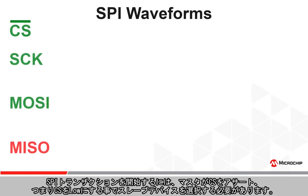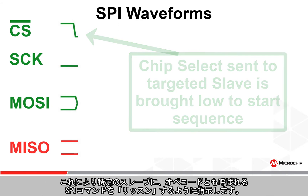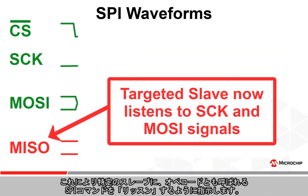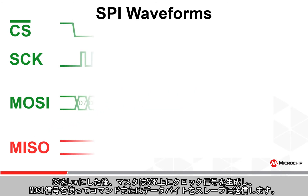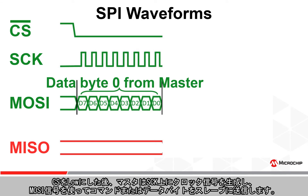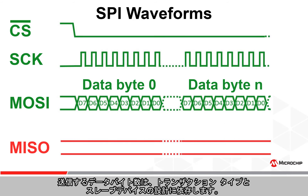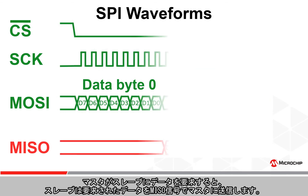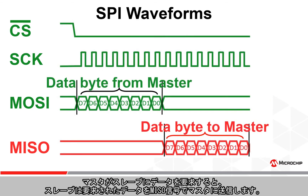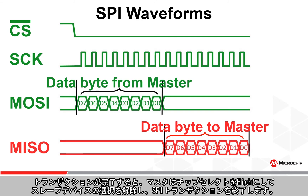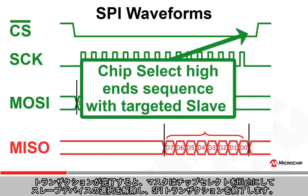To start an SPI transaction, the master must select the slave device by asserting CS, or driving CS low. This tells the specific slave to listen for an SPI command, also called an opcode. After CS has been driven low, the master then generates clocks on SCK to shift command and/or data bytes into the slave using the MOSI signal. The number of data bytes transmitted is dependent on the transaction type and the design of the slave device being accessed. When the master requests data from the slave, the slave will transmit the requested data to the master on the MISO signal. Once the transaction is complete, the master terminates the SPI transaction by driving chip select high to deselect the slave device.